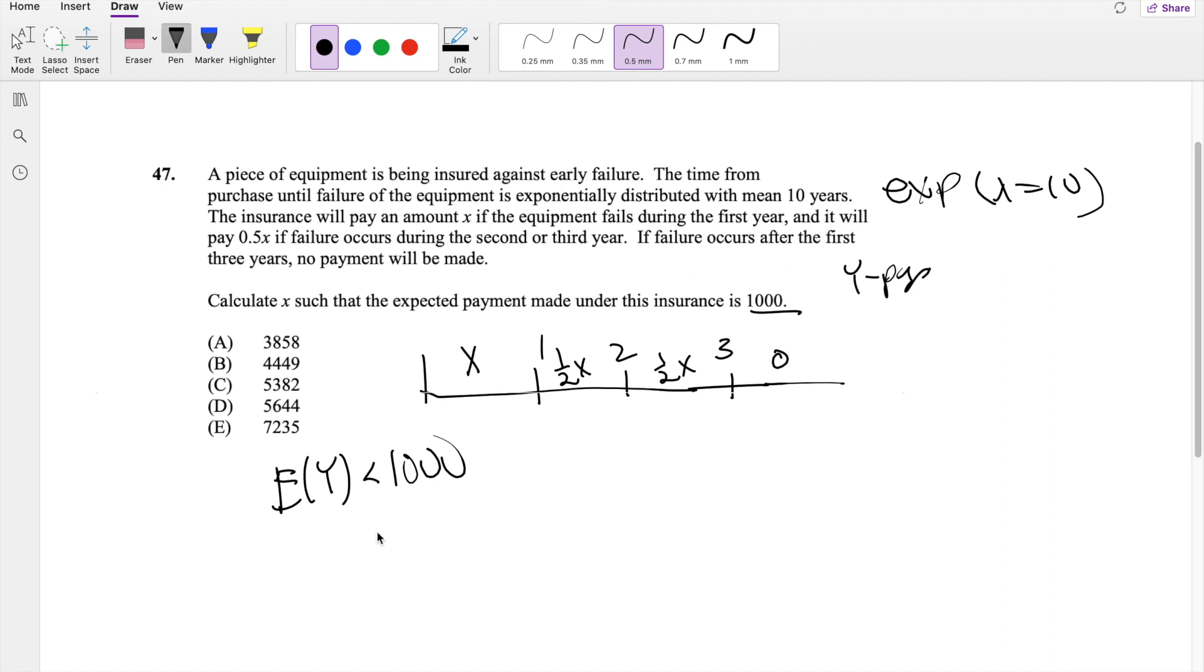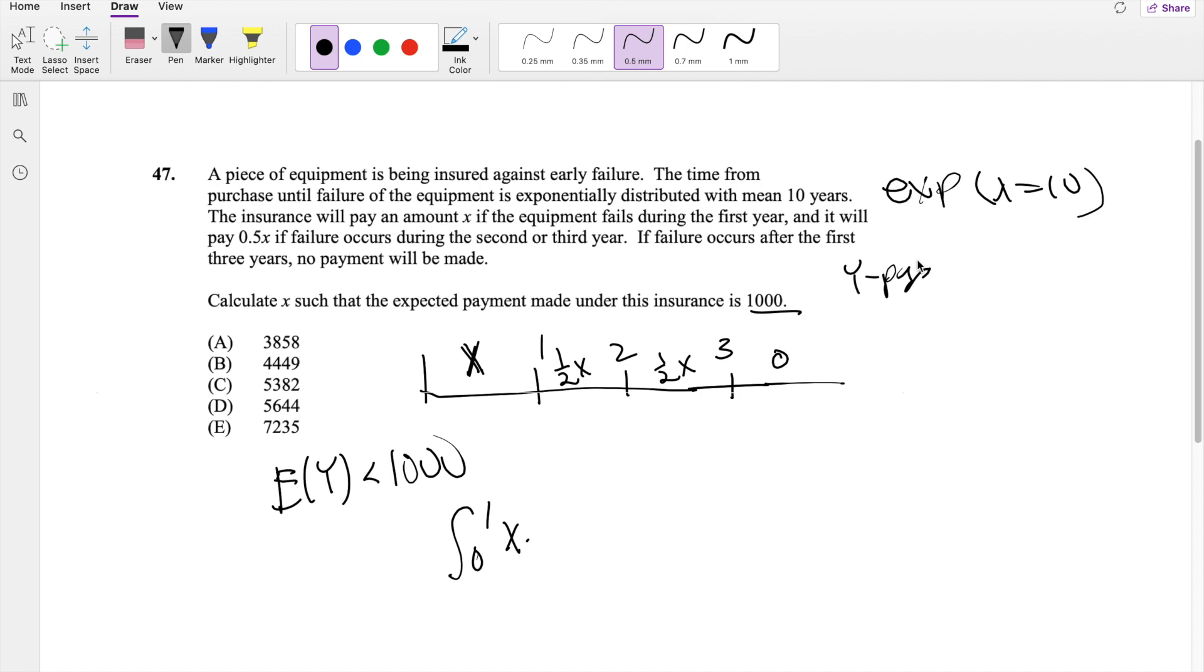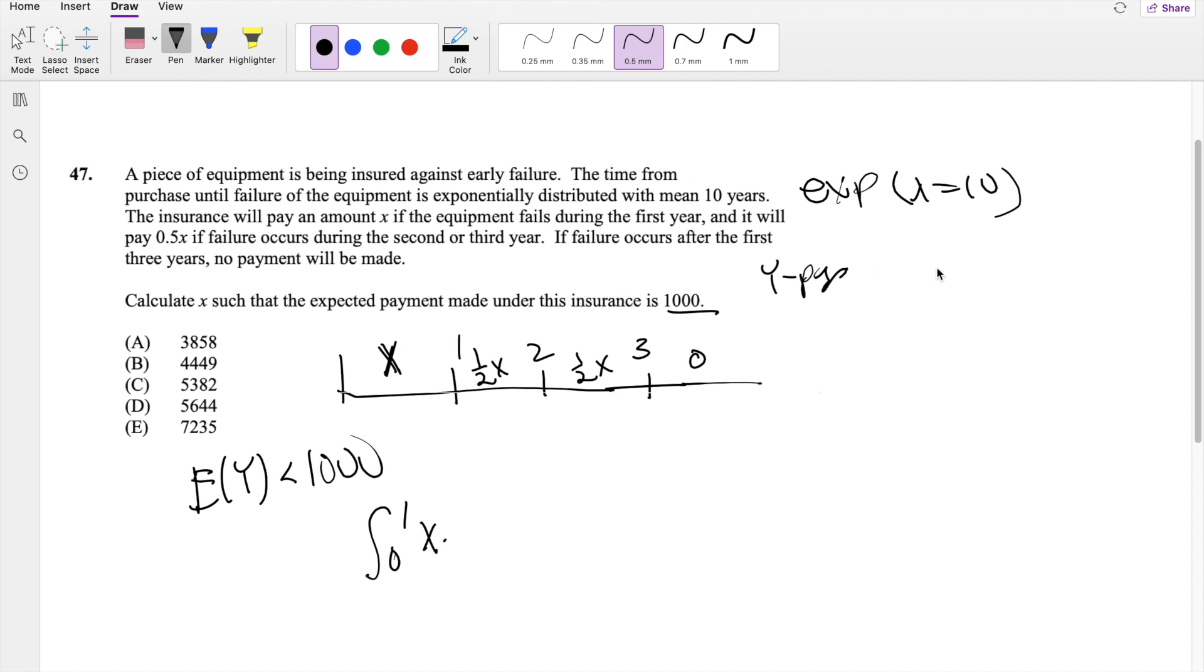As we know, expectation formula just goes to whatever value of X may be times the probability function. So from 0 to 1, it's going to be X times the exponential distribution probability density function: 1 over lambda, E to the negative T over lambda.